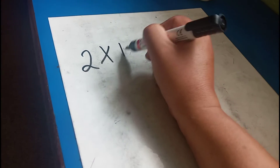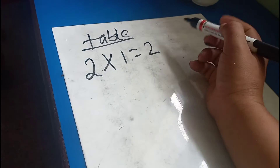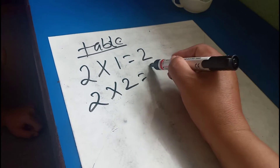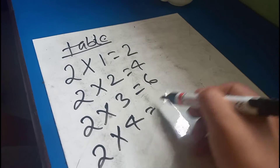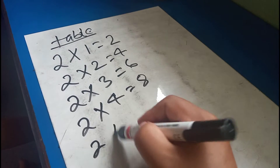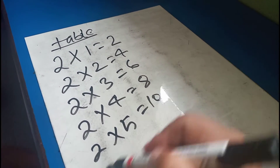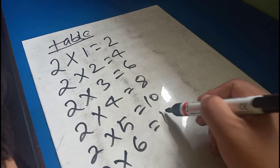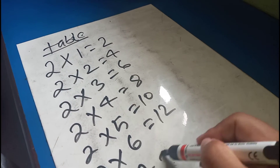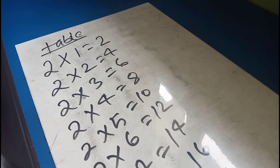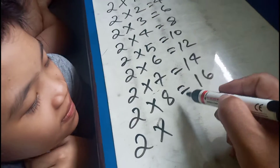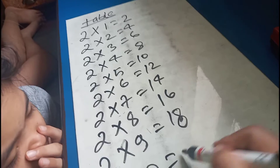Two is one. Table: two one is two, two two is four, two three is six, two four is eight, two five is ten, two six is twelve, two seven is fourteen, two eight is sixteen, two nine is eighteen, two ten is twenty.